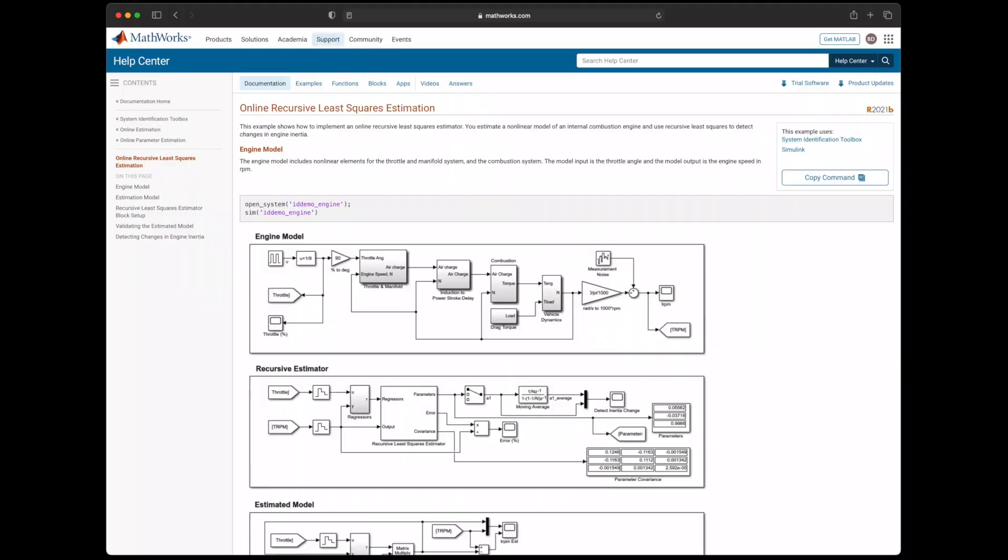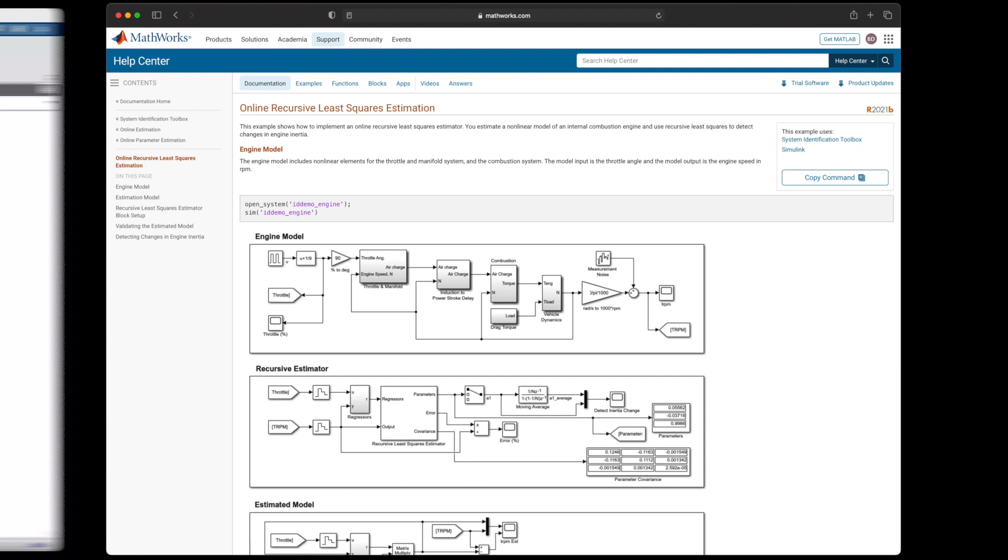Specifically, check out this Simulink example that shows how you can use online recursive least squares estimation to detect a change in an engine's inertia. If we jump over to Simulink, I can show you some of the highlights of this example.